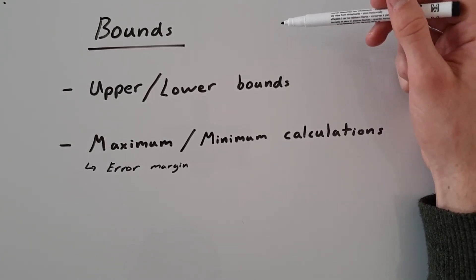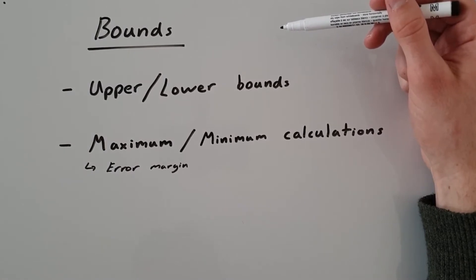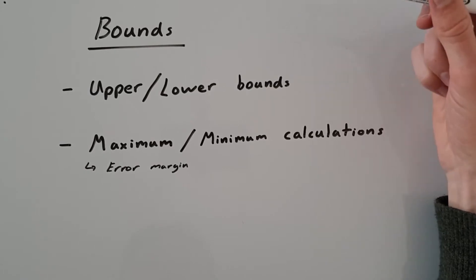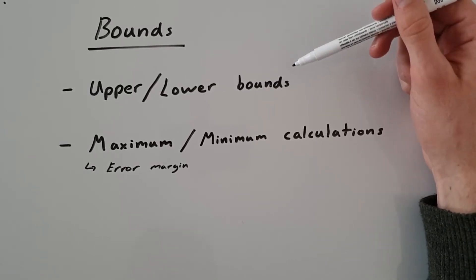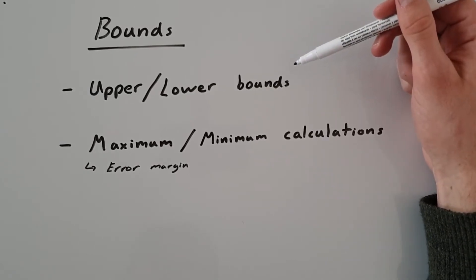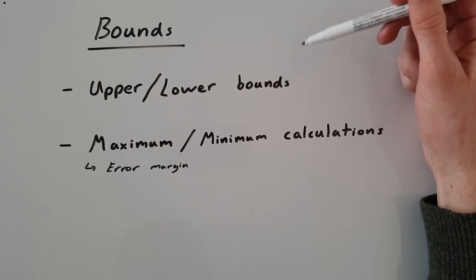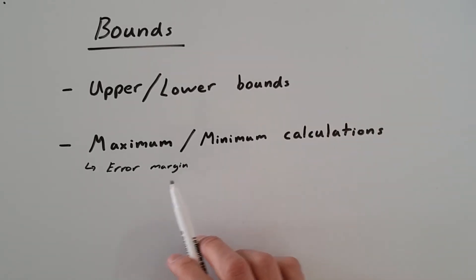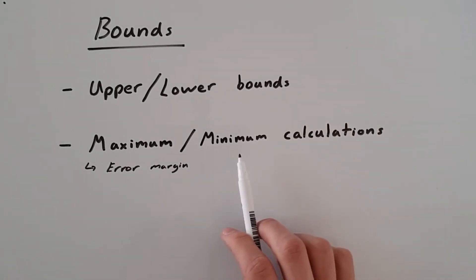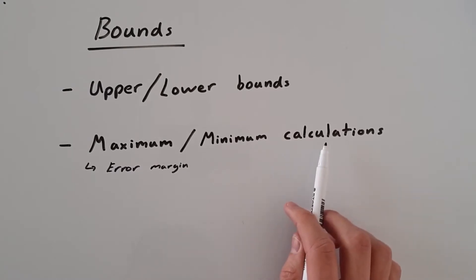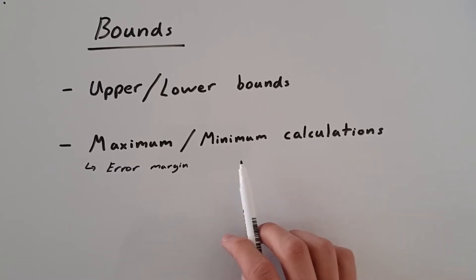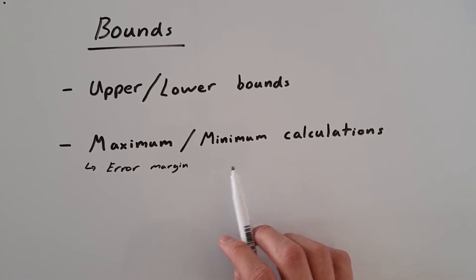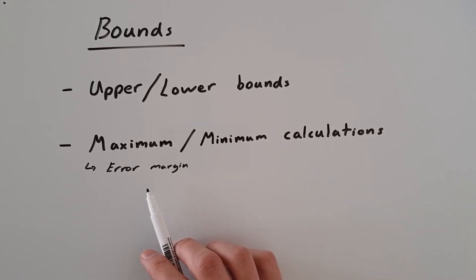This follows on really nicely from the previous video I did on rounding numbers. In this video we'll be thinking about what are the consequences of rounding numbers and what could that number have been before it was rounded. We'll be looking at upper and lower bounds, then moving on to maximum and minimum values of calculations using rounded numbers. I'll also show you how this relates to an error margin, which you'll see quite a lot in science or engineering.